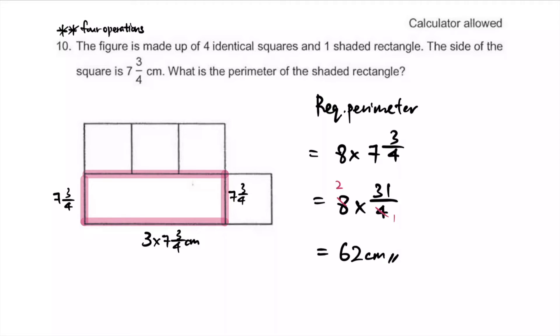How many 7 3/4 are there? A total of 8. I'll multiply the fractions straight away. Before multiplying fractions, we can't use mixed numbers - convert to improper fraction first. Diagonally we can simplify 8 and 4, divide by 4 to get 1 and 2. Multiply numerators: 2 times 31 is 62. Because the denominator is 1, there's nothing to do, so it's just 62 centimeters as the perimeter.